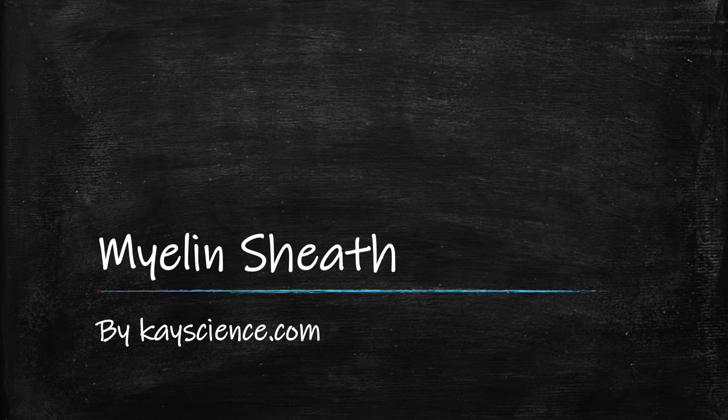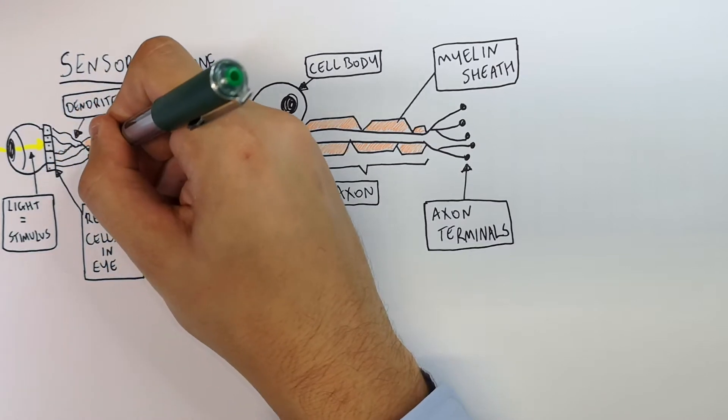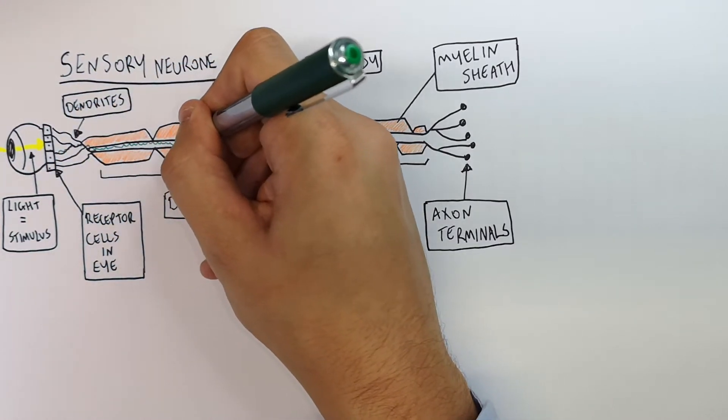The myelin sheath by kscience.com. So the receptor cells when stimulated generate an electrical impulse which travels down the dendrites,